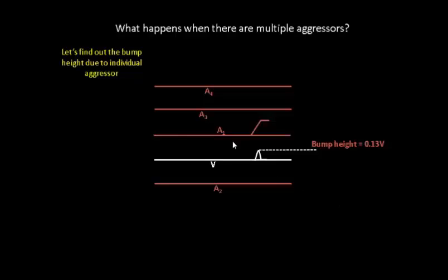Let's take an example for them also. Switching activity of A1 contributes a bump height of 0.13 volts, and let's say switching activity of A2 contributes a bump height of 0.12 volts.